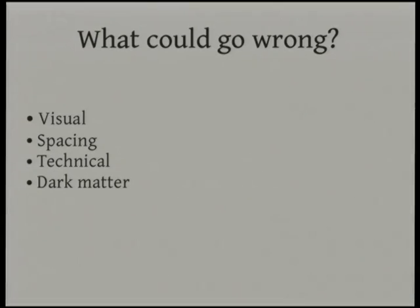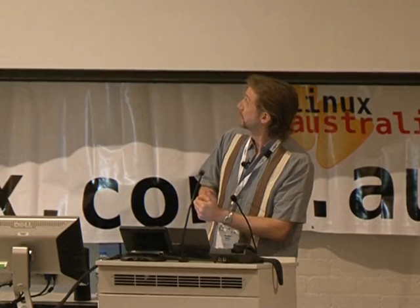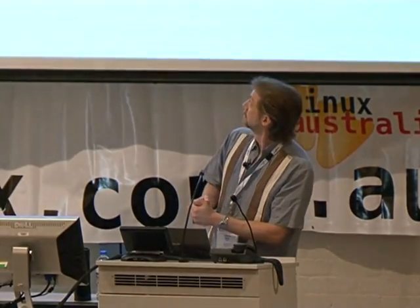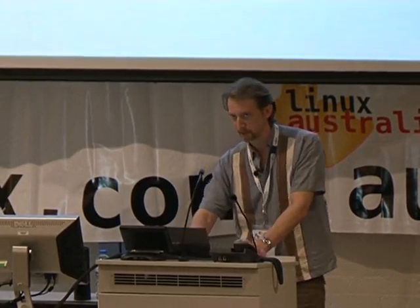To give a roadmap, the things that could go wrong with a font are like any software — almost infinite — but there are some basic general categories. There are visual issues with the shape and look of things. There are issues with spacing, which a lot of times comes down to kerning. There are also technical things. And then there's the dark matter category, which is things that aren't there — and as in physics, the things that aren't there are often the most interesting.